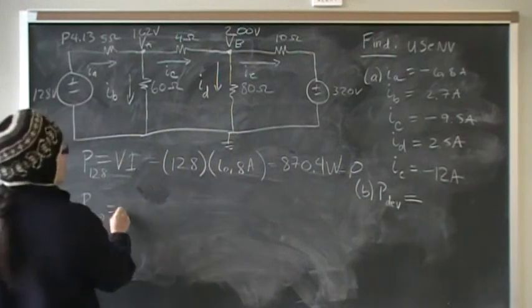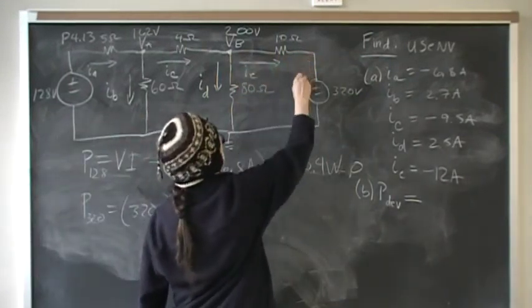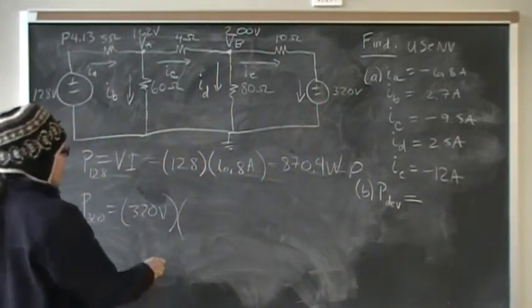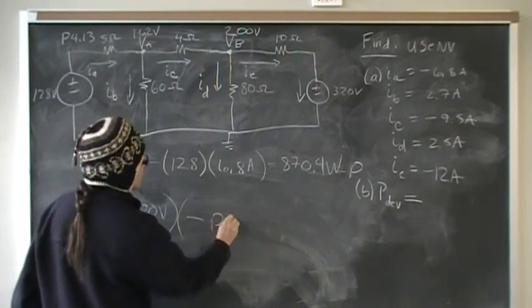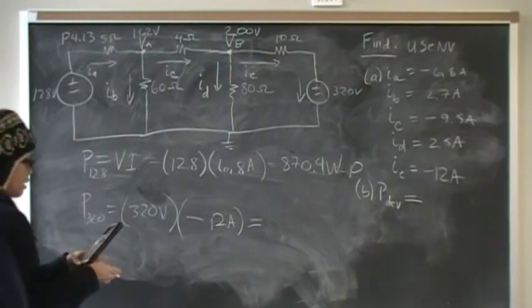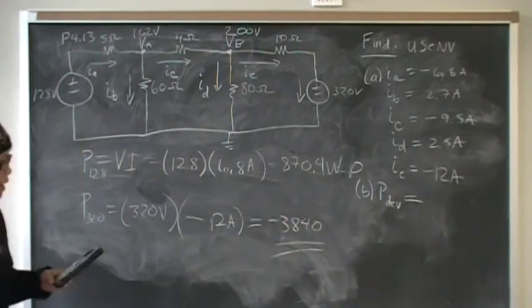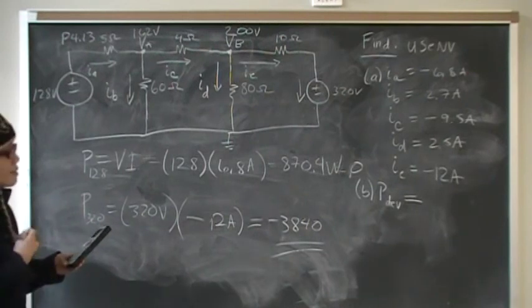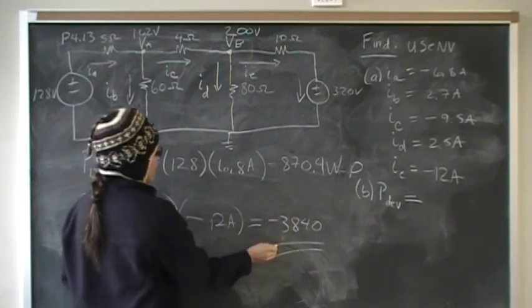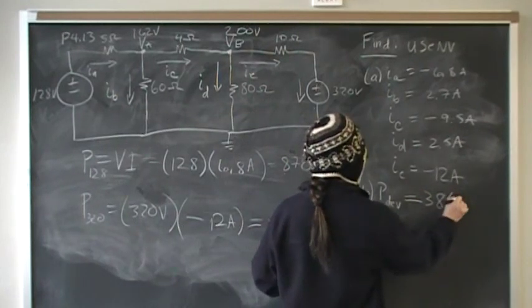Over here, we have 320 volts. The current is shown in this direction. It's leaving the negative end. By the passive sign convention, that's negative current. It's negative. IE is 12 amps. That gives me 320 volts times negative 12. It gives me negative 3840, which means that this circuit, negative power means the voltage source is developing current. So the power developed. We're not looking for what's being absorbed. We're looking for what's being developed. So the power that's developed is 3840 watts.